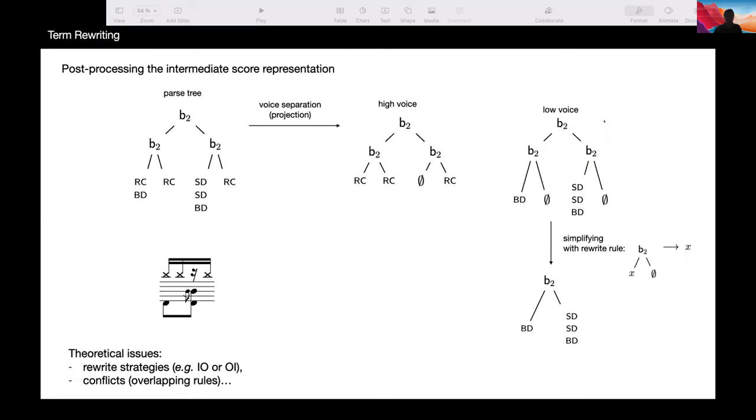It's actually term rewriting that is used for the separation into voices. As I said, the voice schemas are fixed for the drum, so it's quite easy to make the separation. The idea is that we separate one tree, the general parse tree into two trees, according to the voice. There is one voice in that case for the ride cymbal, so we obtain that first tree for the first voice, the high voice. And one voice for the bass drum, the kick, and the snare drum. And we obtain this second tree for the second voice, the bottom one here.